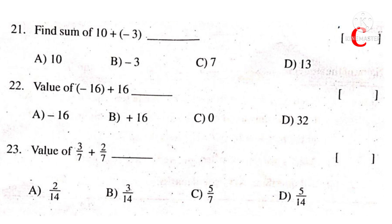Value of minus 16 plus 16 means 16 minus 16 which gives 0. The correct choice is C. Value of 3 by 7 plus 2 by 7 - observe that the denominators are equal, so like fractions. We can add easily. Adding the numerator 3 plus 2 gives 5, denominator 7. So 5 by 7 is the answer. The correct choice is C.